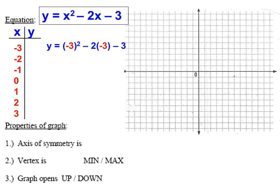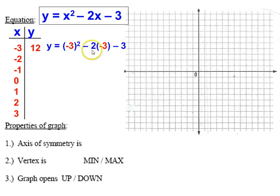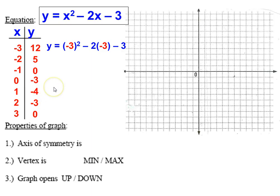Plugging in negative 3: negative 3 squared is positive 9, minus 2 times negative 3 is positive 6, minus 3 gives us 9 plus 6 minus 3 equals 12. Plugging in negative 2 gives 5. Negative 1 gives 0. Plugging in 0 gives negative 3. Plugging in 1 gives negative 4. Plugging in 2 gives negative 3, and plugging in 3 gives 0. These all came from actually working through the arithmetic.